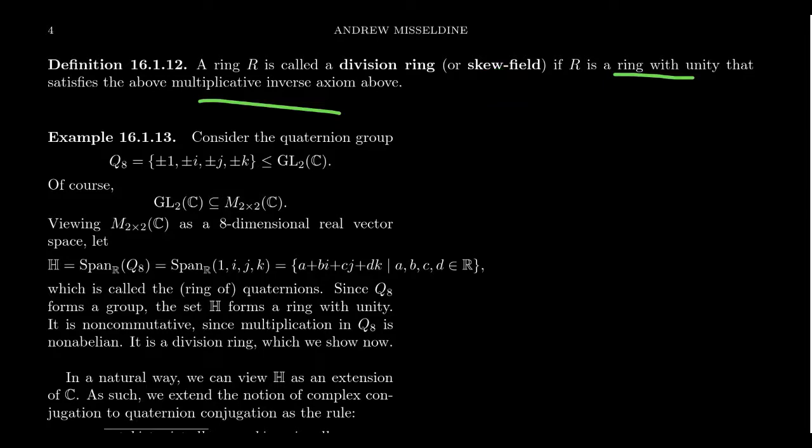So there's some type of twist when you do the multiplication. A skew field could be commutative or it could not be commutative — we're not assuming anything about commutivity.